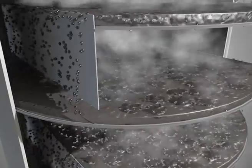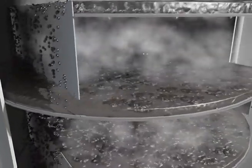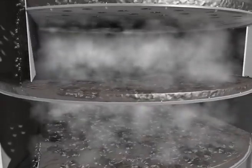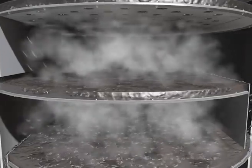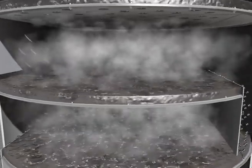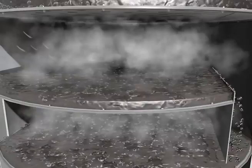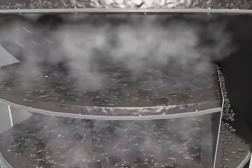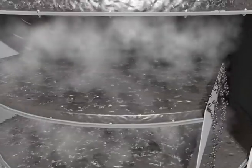Valve trays are designed to have better turndown properties than sieve trays; therefore, they are more flexible when the feed rate varies. Although tray columns provide stepwise contact between the vapor and liquid phases, packed columns provide continuous contact without full disengagement of the vapor and liquid between the top and bottom of the packed bed.